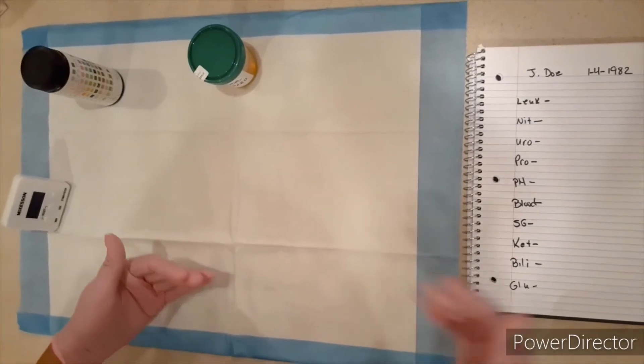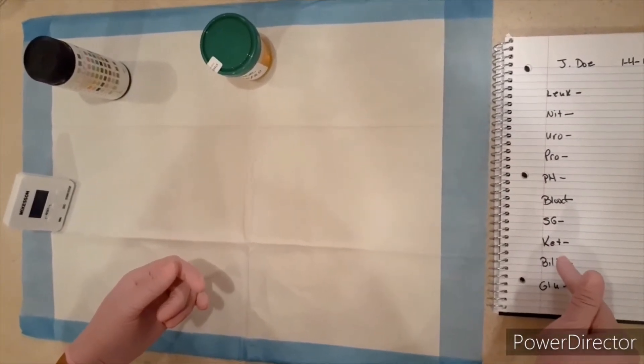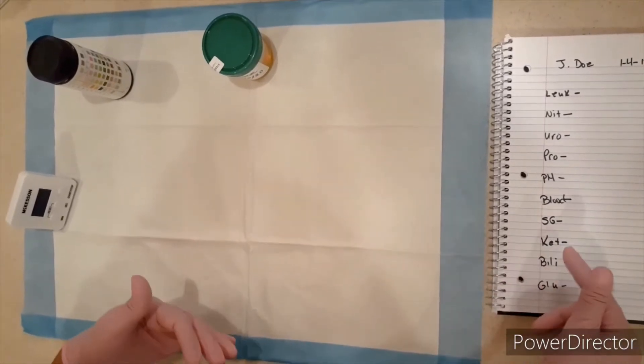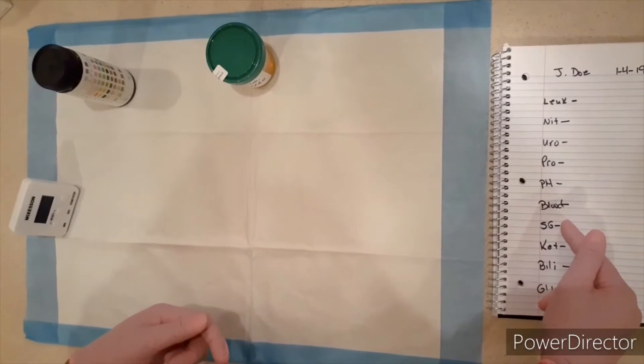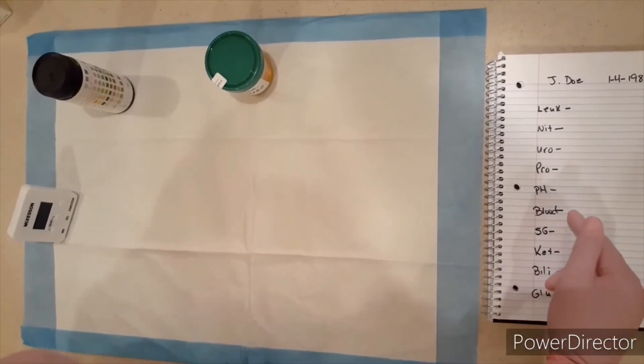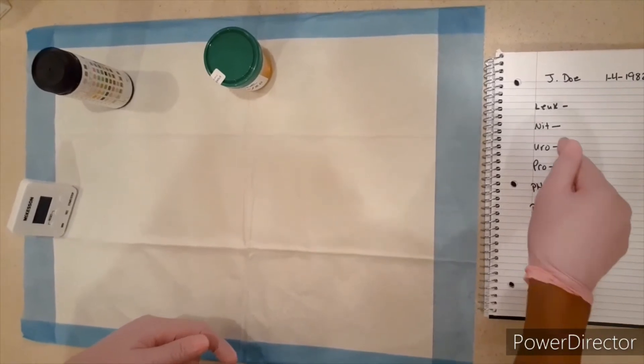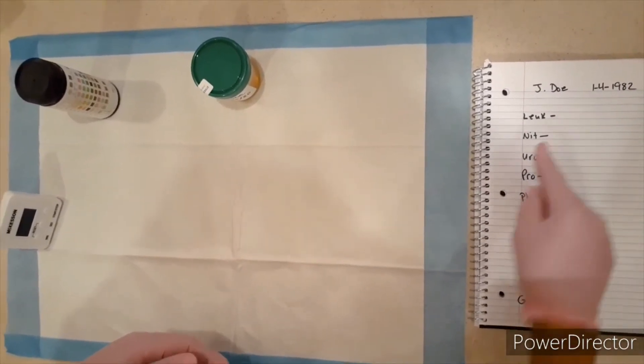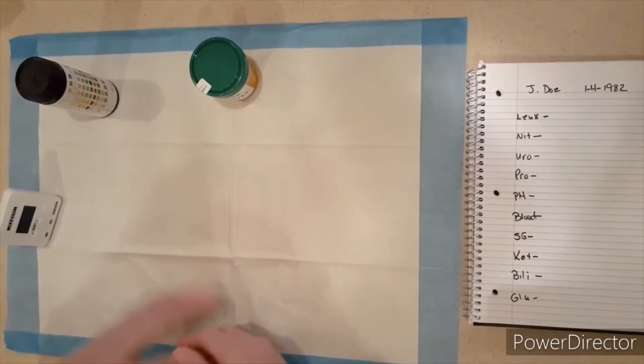So in 30 seconds, I have to write down the number of my glucose and bilirubin. Then in 40 seconds, I'll need to write down ketones. In 45 seconds, I'll write down specific gravity. In 60 seconds, I'll record the blood, the pH, the protein, the urobilogen, the nitrites. I have to wait a full two minutes before I can actually record the results of our leukocytes.